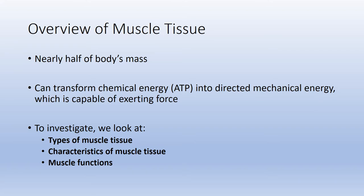Remember, in chapter three we discussed the four tissue types of the human body: epithelium, connective tissue, nervous tissue, and muscle tissue. Muscle tissue is responsible for using ATP, or energy, and transforming it into mechanical energy, or movement, which is capable of exerting force. From here, we will look at the three different types of muscle tissue, the characteristics of all three types, as well as the four functions of muscle tissue.